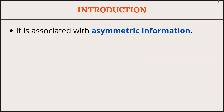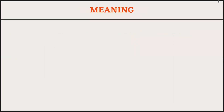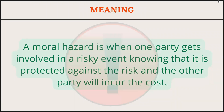Let's begin with the introduction. The idea of moral hazard is associated with asymmetric information — you can find our video on asymmetric information, the link is given in the description. The problem of moral hazard arises when both parties have incomplete information about each other. A moral hazard is when one party gets involved in a risky event knowing that it is protected against the risk and the other party will incur the cost.